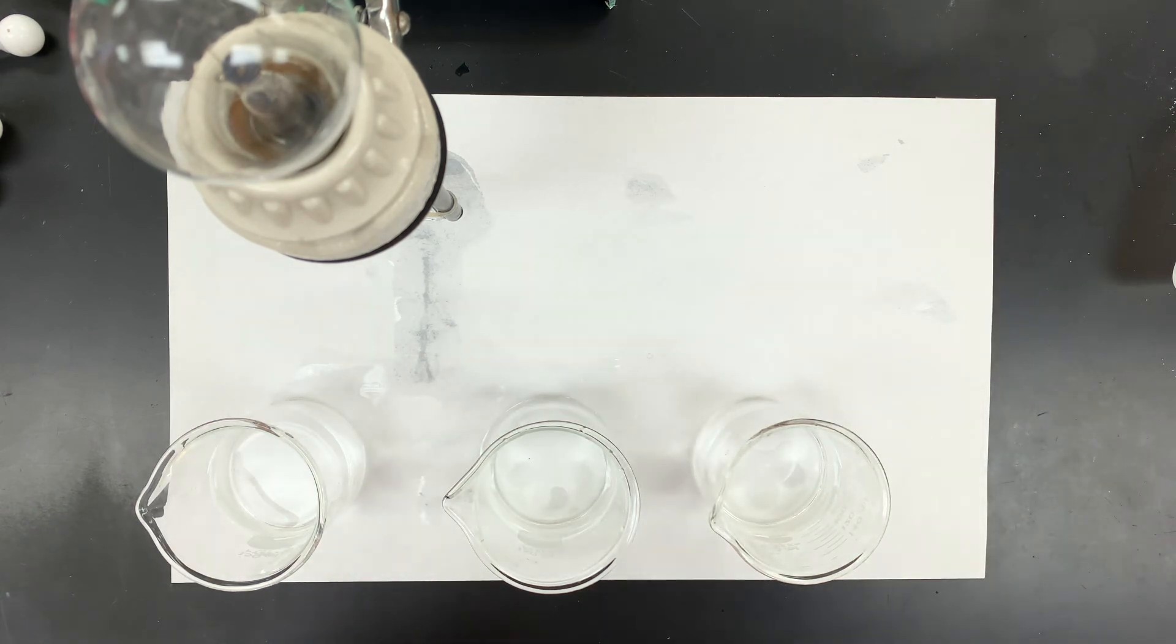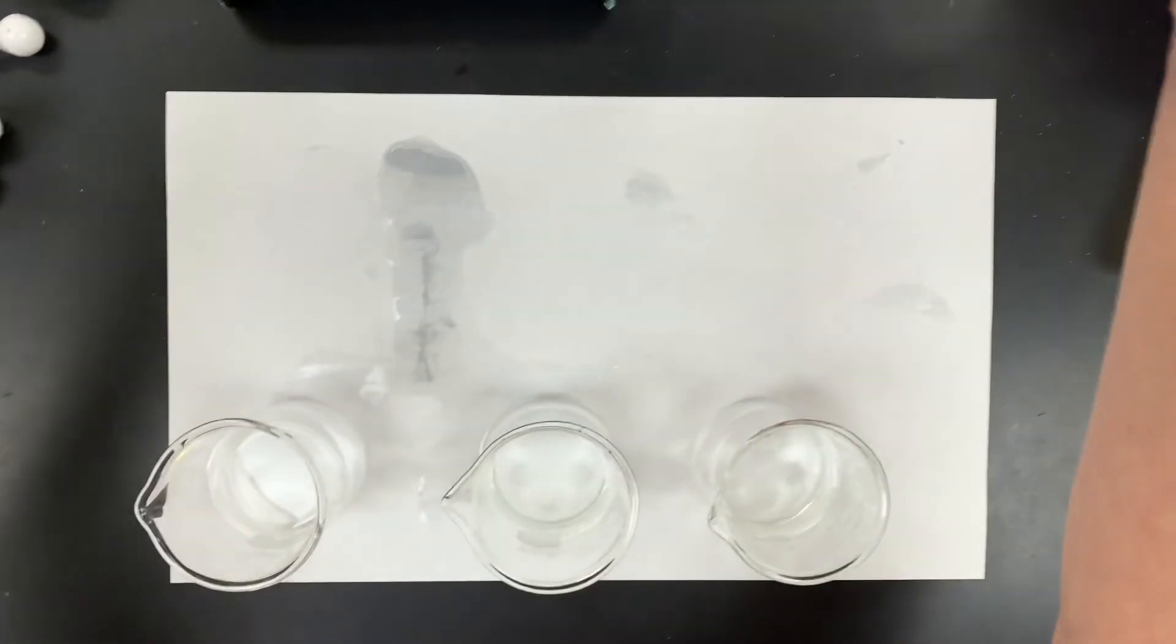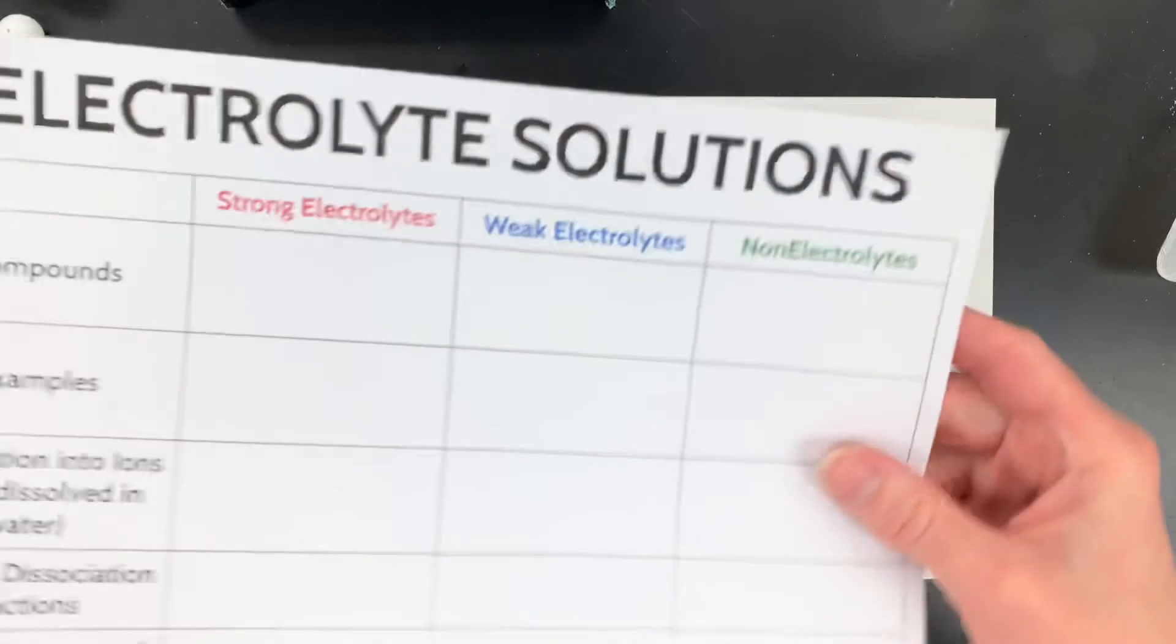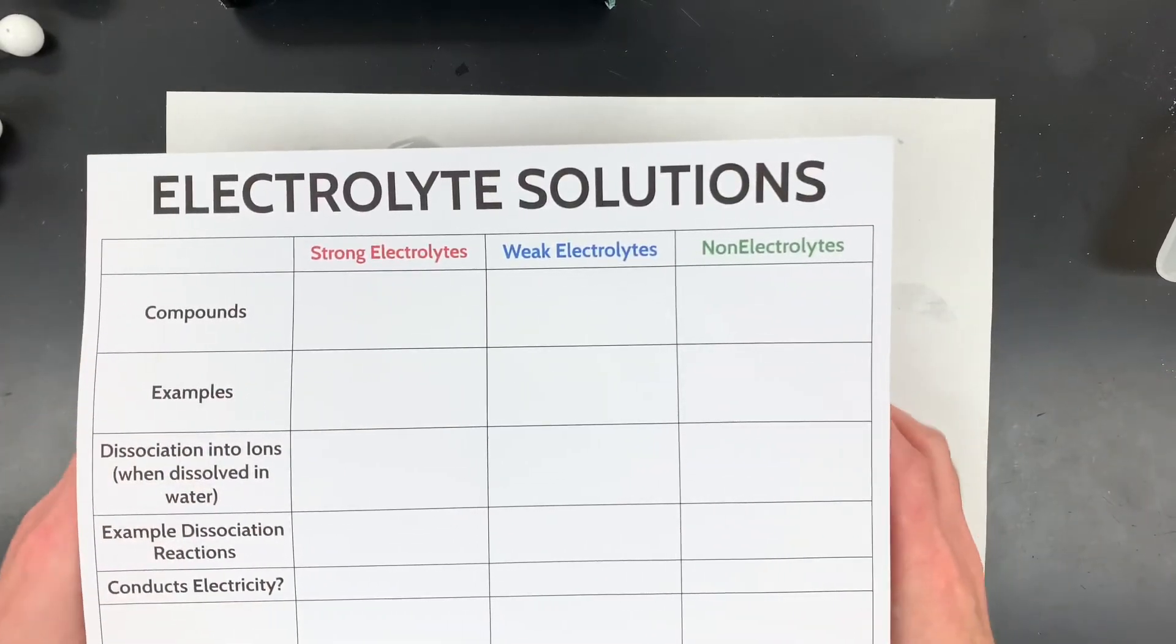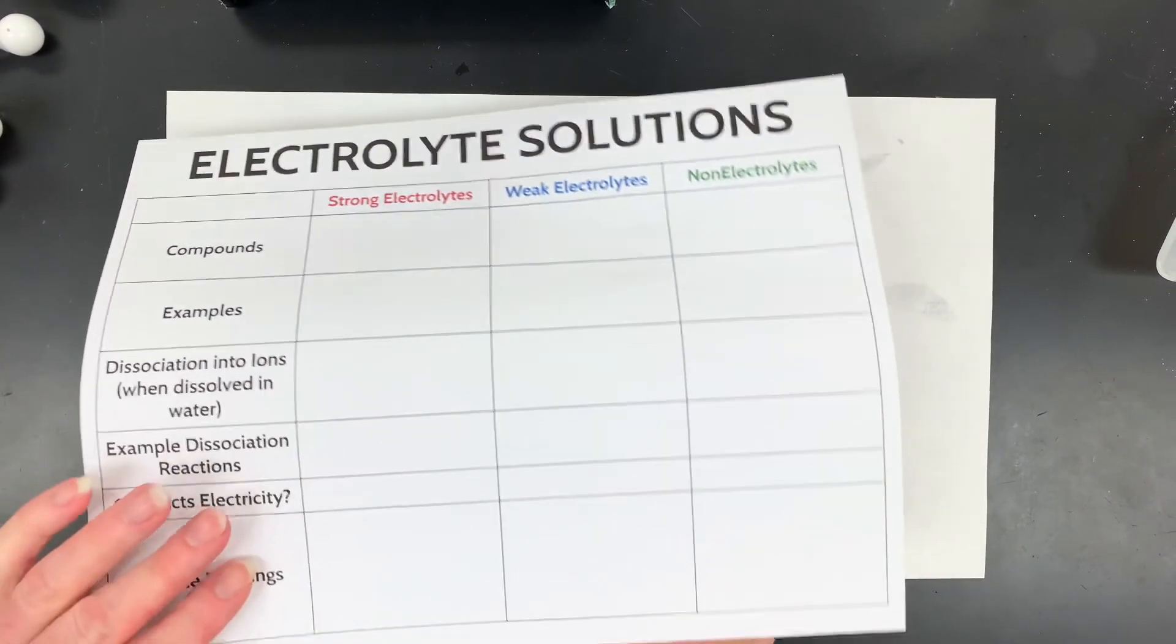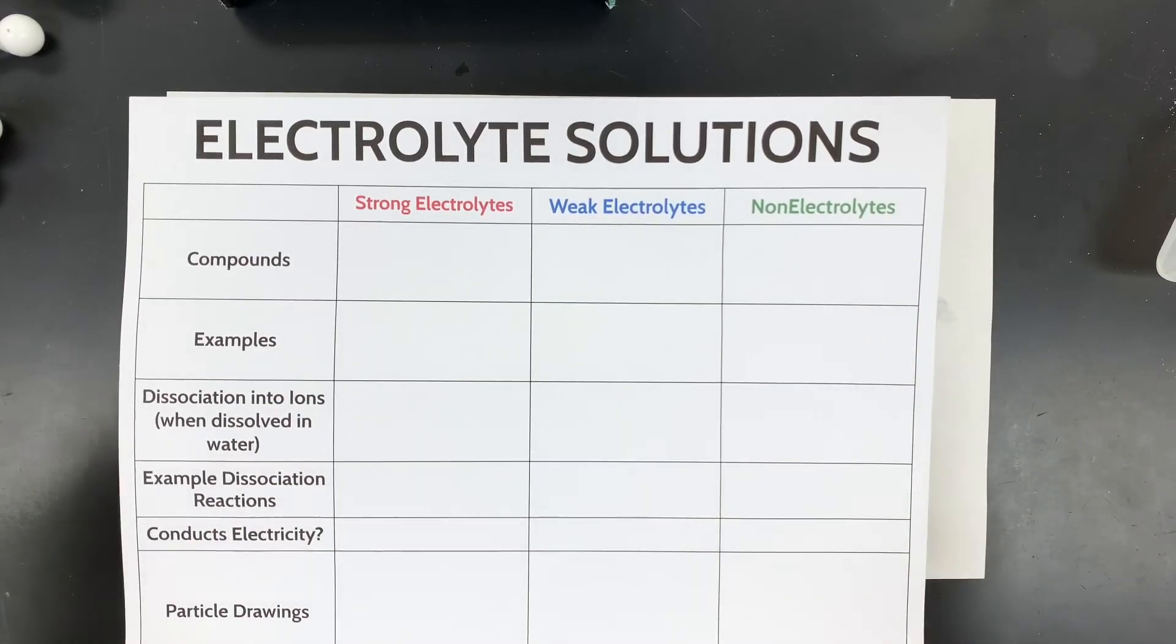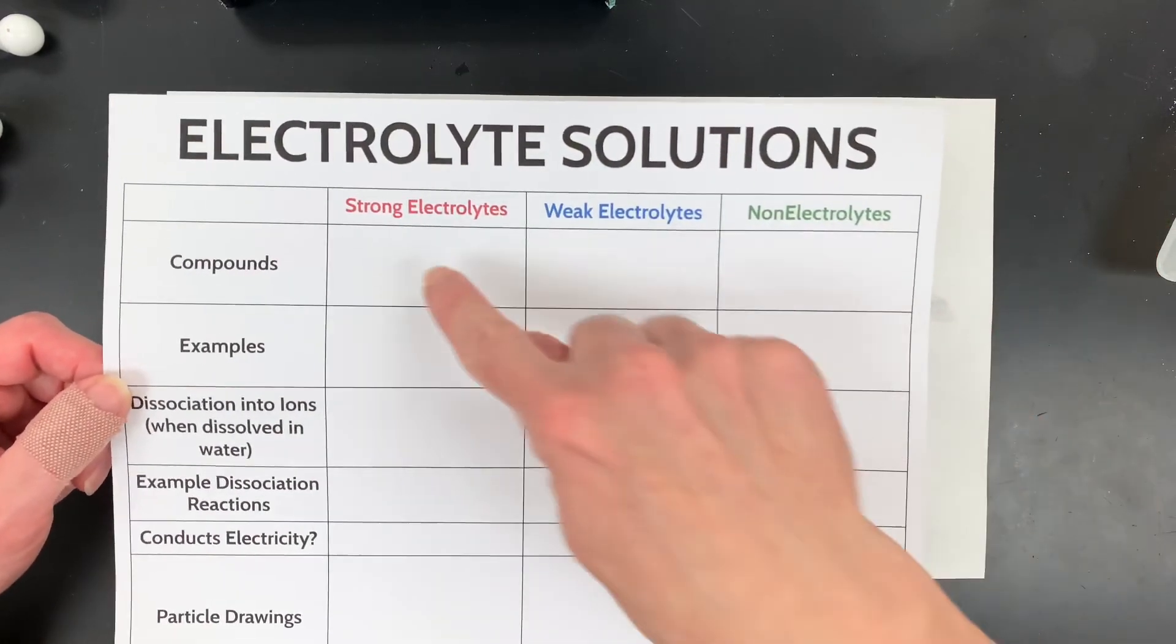All right, so again, the whole goal here was to fill this out. Let me grab this and unplug it so I don't hurt myself here and slide this out of the frame. So again, the whole goal was to fill this out. Wait right on top of the beakers here. Slide those in here in the frame here. And let me take a peek. Yep, that looks pretty good. So the goal is to again, classify your strong electrolytes, weak electrolytes and non-electrolytes, write those dissociation reactions, kind of understand why they conduct electricity.